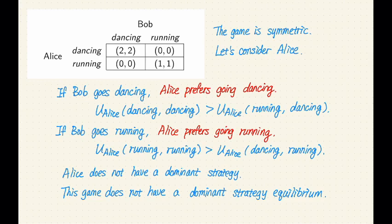Let's take a look. So there are two choices for Bob. Bob either goes dancing or Bob goes running. So for the first case, when Bob goes dancing, then we can write down the utility for Alice.